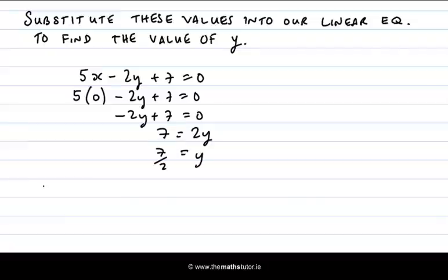Now remember that these values of x and y are related, so when x is 0, y is 7 over 2. That's one complete solution.